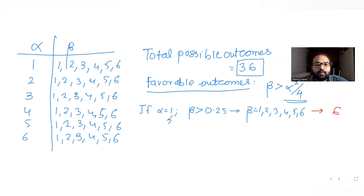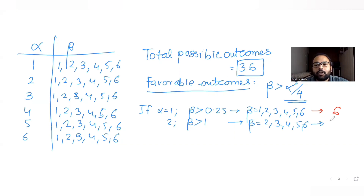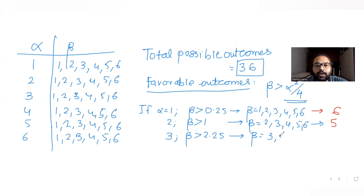If alpha is 2, beta must be greater than 4/4 = 1. So beta cannot be 1; it can be 2 through 6, giving 5 outcomes. If alpha is 3, beta must be greater than 9/4 = 2.25. So beta can be 3, 4, 5, or 6, giving 4 outcomes.